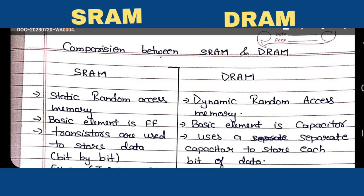In the case of static RAM, components are used in the circuit in which data is stored as long as the power is applied. When power is applied, data will be stored. While in the case of dynamic RAM, we have to refresh the data once again periodically.